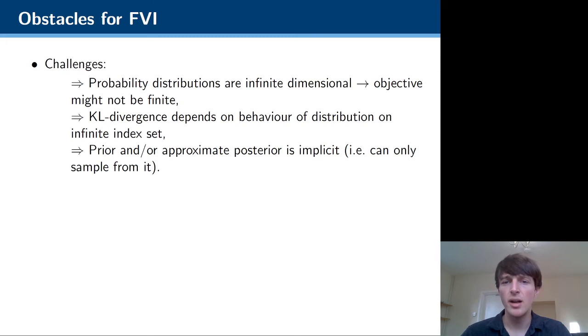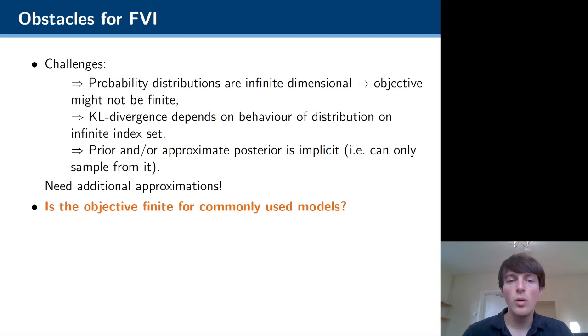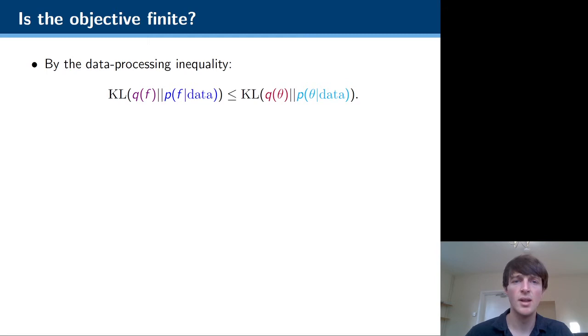And also, usually the prior or the approximate posterior is implicit, so you can sample from both, but you can't evaluate the log density ratio between the two or compute the KL divergence in closed form. So in this work, we want to look at how these additional approximations affect the quality of inference, as well as when the objective function is finite.